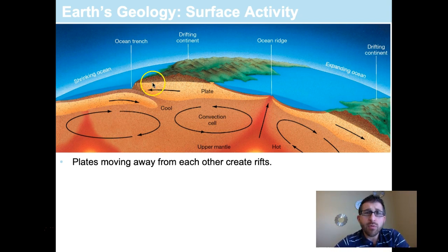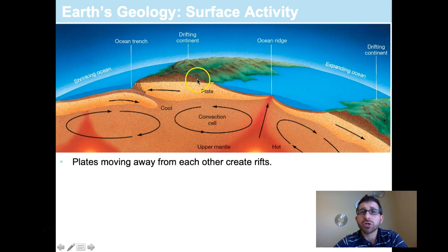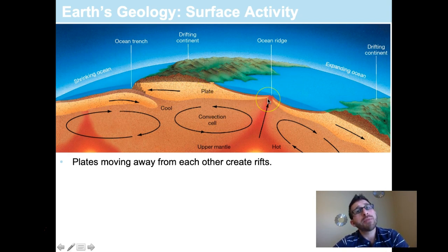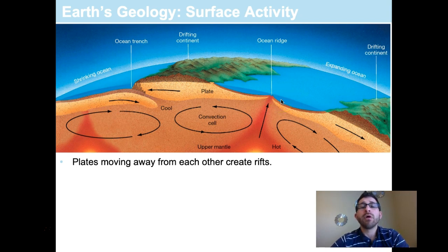At a subduction zone we end up with an ocean trench and usually a line of volcanic activity along that trench. That would be what we consider to be an active margin — an area where there's active activity happening right now. On the other side of the continent we have what we consider to be a passive margin. Passive margins generally are where the oceans are growing in size at something called a mid-ocean ridge, and this is an area where the convection cells are moving apart from one another. As a result, we have a crack forming in the Earth's crust, opening up and allowing more ocean to be produced along a volcanic ridge system.